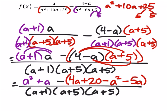Well, now I would change the signs. So let's go ahead and change those signs. That's going to be minus 4a. That'll be minus 20. Plus a squared and plus 5a right there.